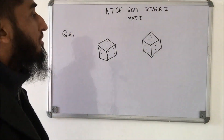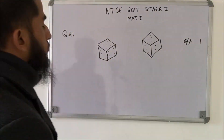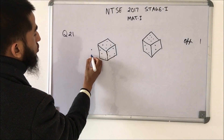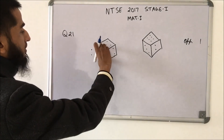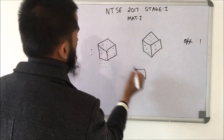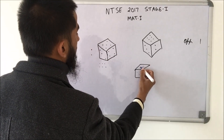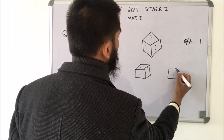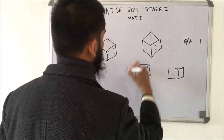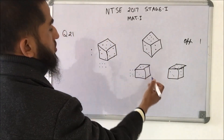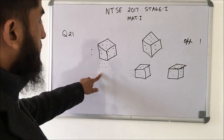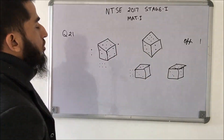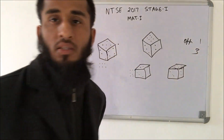Two positions of a dice are given and we need to find the number opposite to 1. We can see that 3 is common in both positions, and when 2 is showing, 6 is also showing. So this number should be 2 and this should be 6. If we roll it through the positions: 3 is here, 2 comes on top, 6 goes to the side — confirming that combination. We have 2, 3, 4, 5, 6 accounted for, so the only number left is 1's opposite which is 3. The number opposite to 1 is 3.